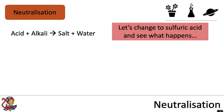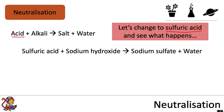Let's change to sulfuric acid and see what happens. It's the same neutralization equation but this time using sulfuric acid. Sulfuric acid plus sodium hydroxide makes sodium sulfate plus water. Rather than a chloride, we're now producing a sulfate because we are using sulfuric acid. The first part of the salt still comes from the first part of the alkali, so we make sodium sulfate plus water.